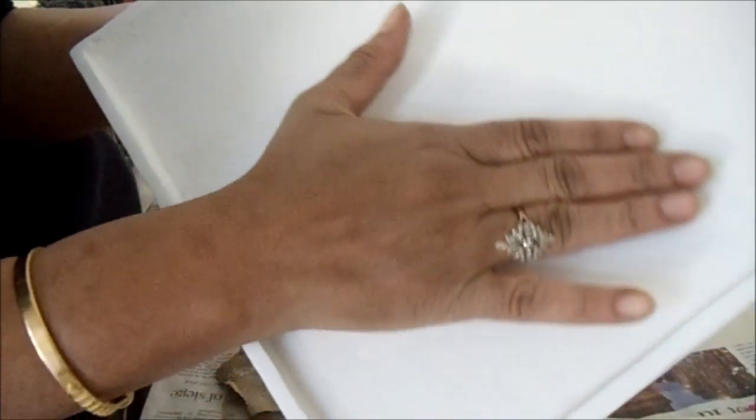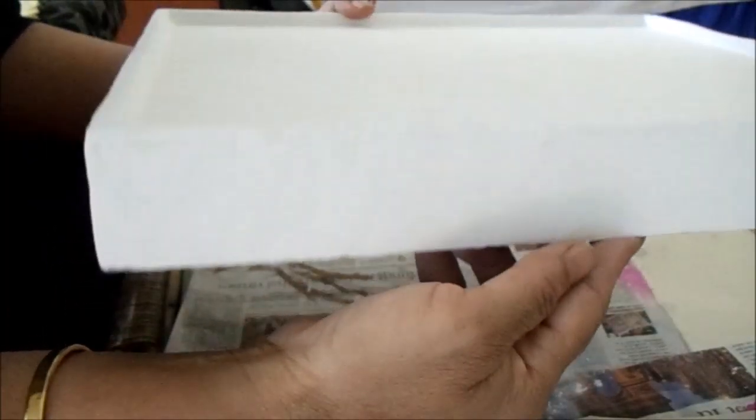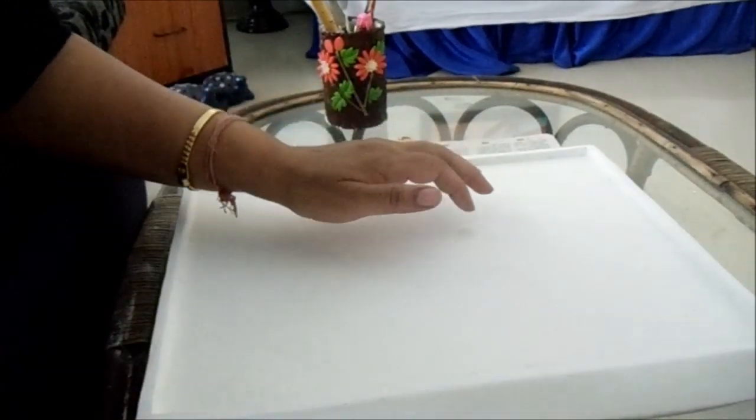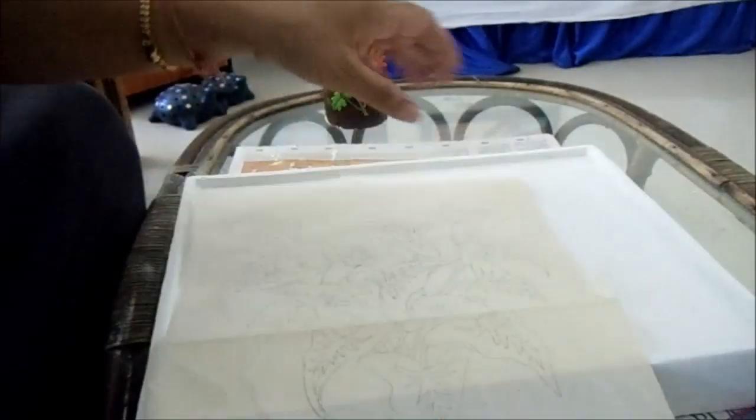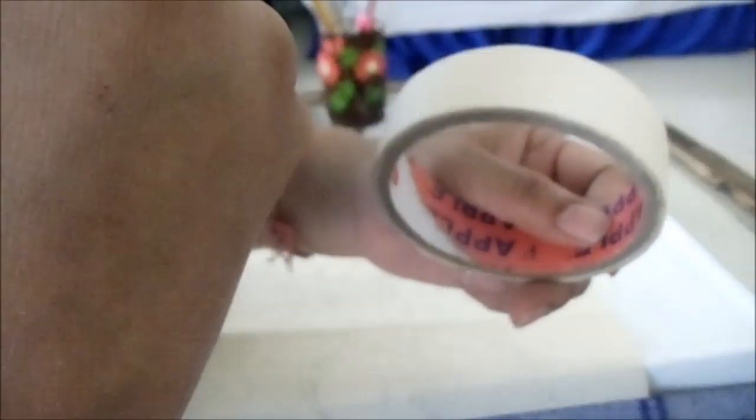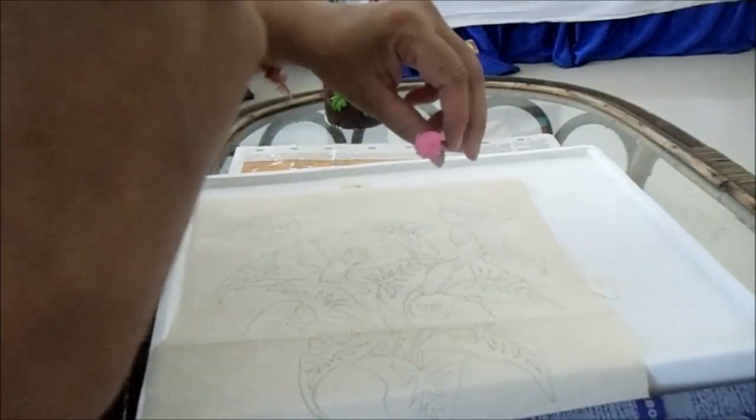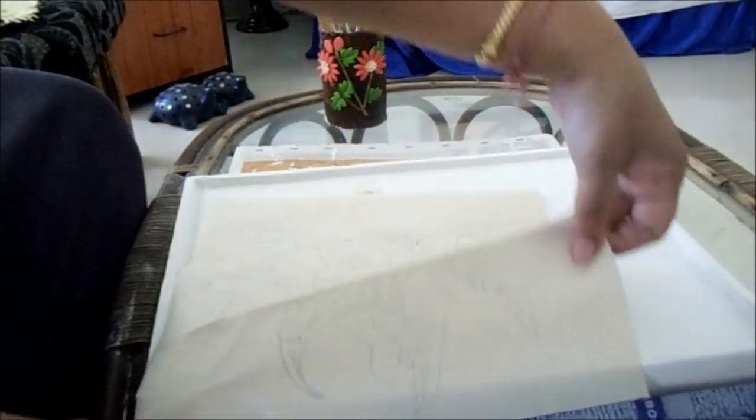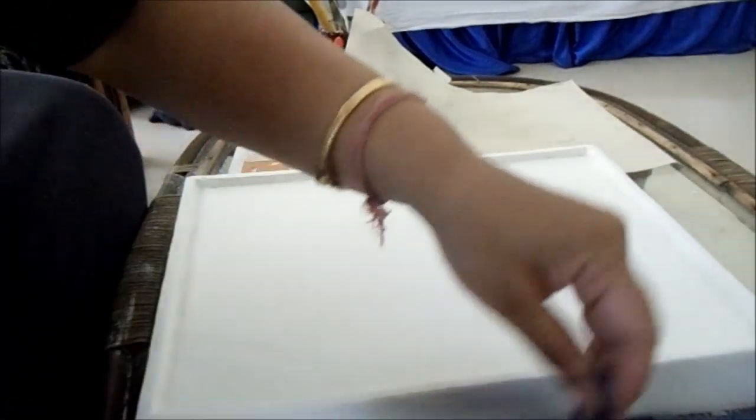It's completely dry now and looks sweet. Now the next step. For this we need a design, carbon paper, tape, and a pencil. Start the process. First place the carbon paper.